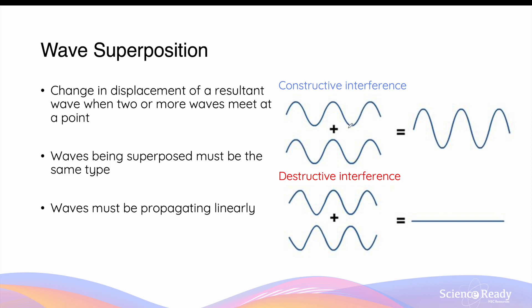Now when waves undergo superposition, there are two things that can happen. One is called constructive interference and the other is called destructive interference. The effect of superposition is best understood and visualized by using the transverse wave model. Remember that the point at which the wave has its maximum displacement is referred to as a crest, and the point at which you have the most negative displacement is known as a trough.